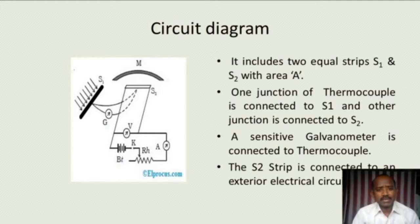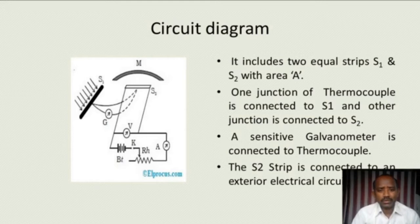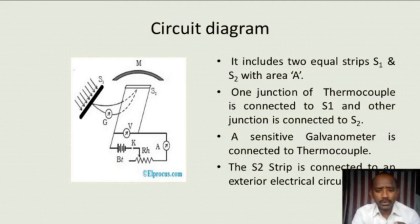There are two terminals, S1 and S2. S1 is open to solar radiation, but S2 is shielded by some metal surface. Shielded means solar radiation should not fall on strip S2. S2 is connected to a circuit which contains a voltmeter to measure the potential difference between the two terminals, and it is connected to an ammeter. A is the ammeter which measures current, B is the battery, K is the plug key, and RH is the rheostat, which is used to vary the current or voltage. A sensitive galvanometer is also connected to the thermocouple.